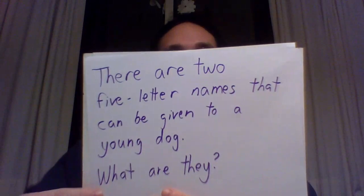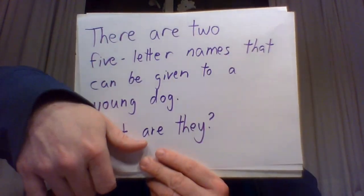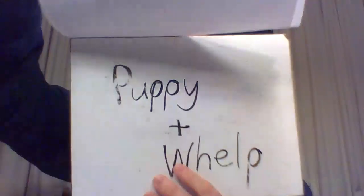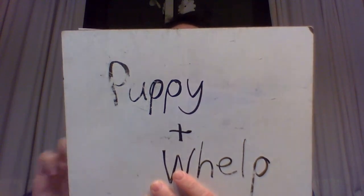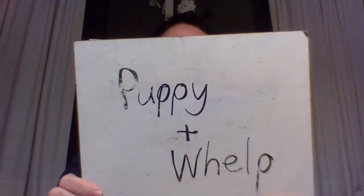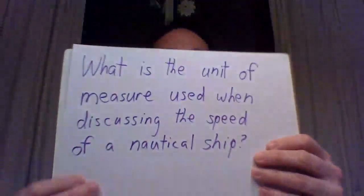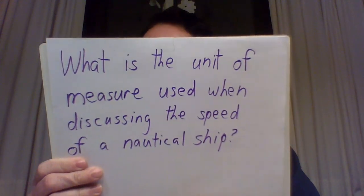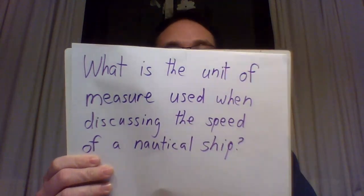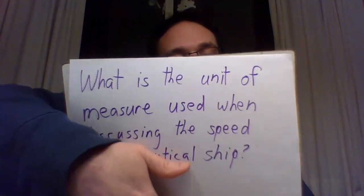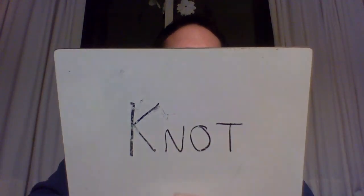Number three: the five-letter names that can be given to a young dog — puppy and whelp. Number four: what is the unit of measure used when discussing the speed of nautical ships? The answer is knot.